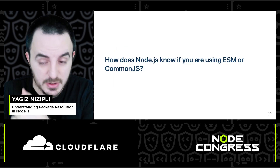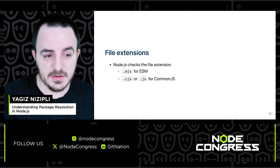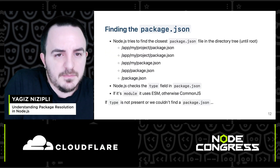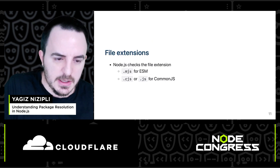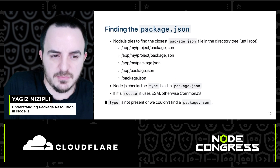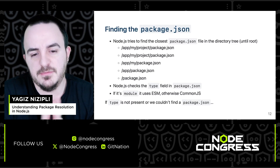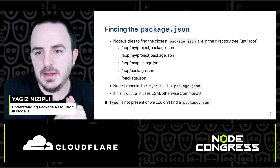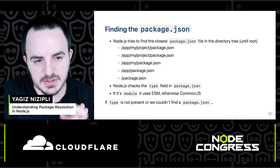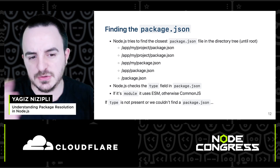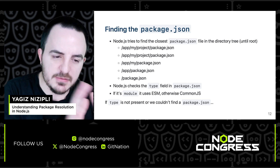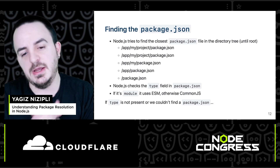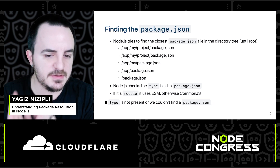So how does Node.js know if you're using ESM or CommonJS? First, it checks file extensions. If the extension is .mjs, it's ESM. If it's .cjs or .js, it's CommonJS. If the extension is just .js, we don't know, so we need to find the package.json for the context we're executing in. Node.js tries to find the closest package.json in the directory, traversing up to root. If the package.json is found, Node.js checks the type field — if it's 'module', it uses the ESM loader; otherwise, it uses CommonJS.